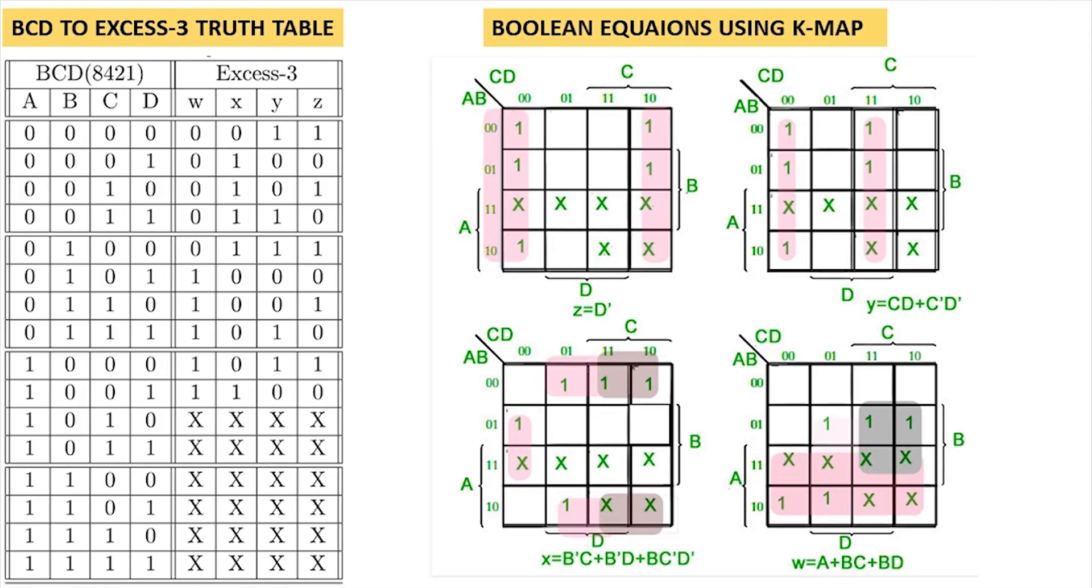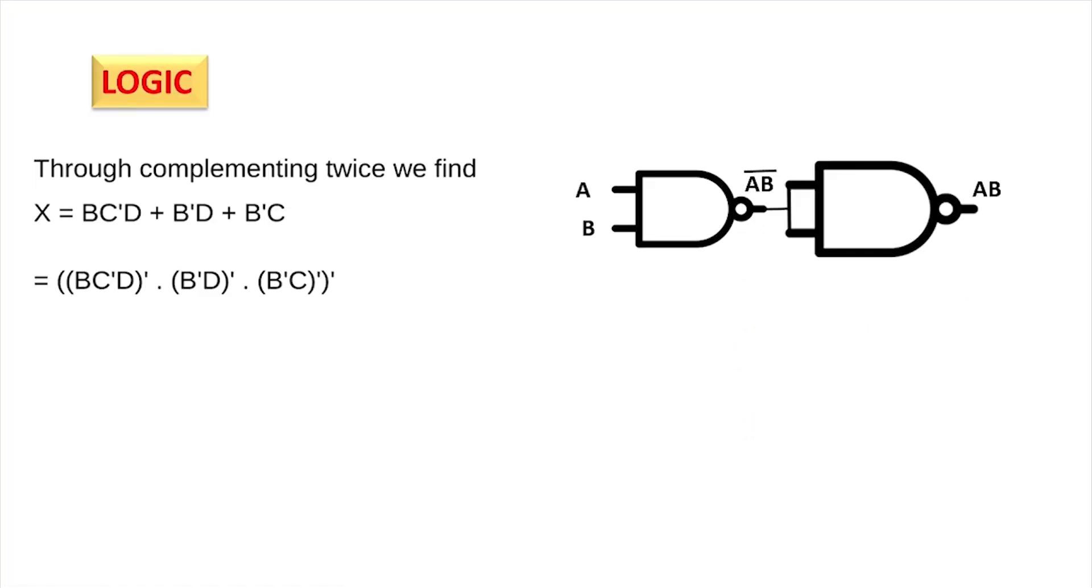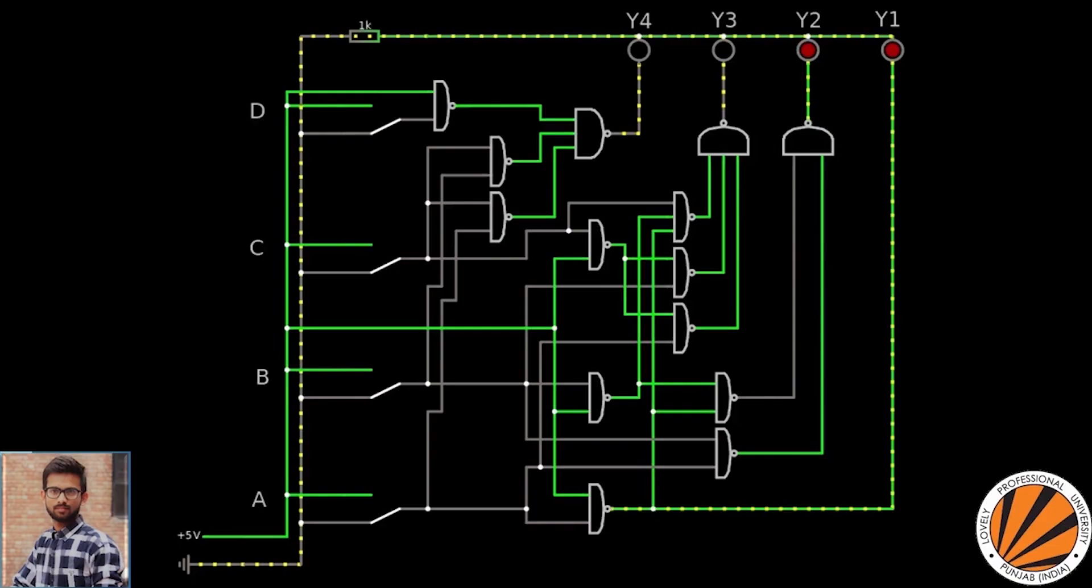This is the truth table for BCD to Excess-3 Code Converter and there are boolean equations. By using K-Maps we get the boolean equations from the truth table. Just double complement the equations which you are getting by using NAND gates. By using two NAND gate series we are going to complement the equations.